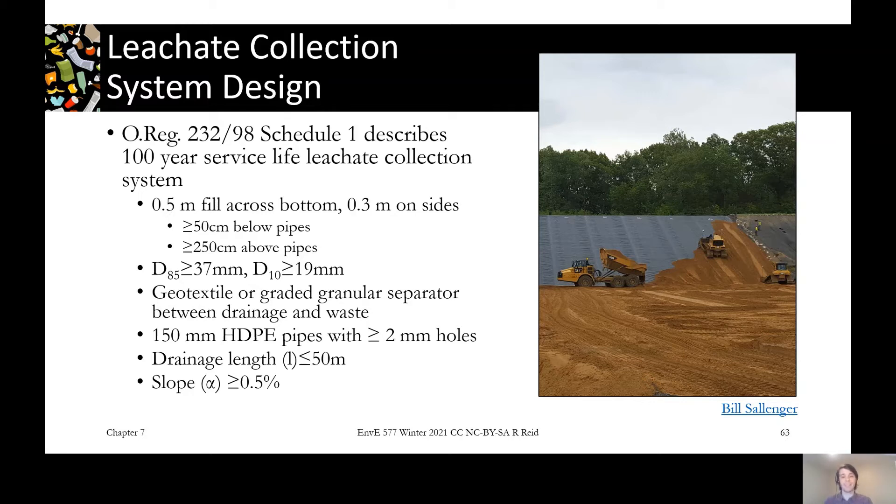Any leachate pipes that are running through that layer to help carry the leachate out are six inches in diameter, and they have two millimeter holes all the way down to help let that leachate get in and then eventually out of the system.